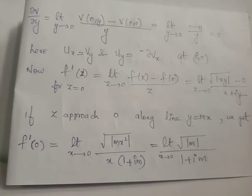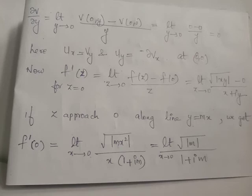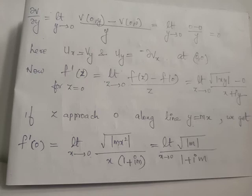As x approaches 0, y also approaches 0. Simplifying, we can take x² outside the modulus, and √(x²) = x, which cancels with the x in the denominator. Thus f'(0) = limit as x tends to 0 of √|m| divided by (1 + im). The limit depends on the value of m. For example, choosing y = 2x gives f'(0) = √|2| / (1 + 2i).